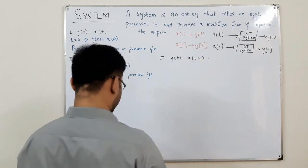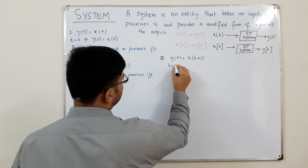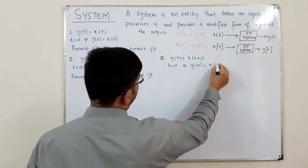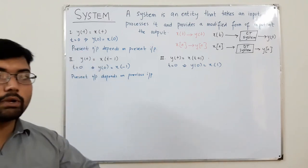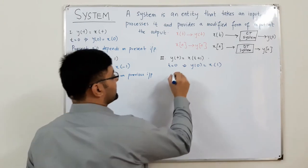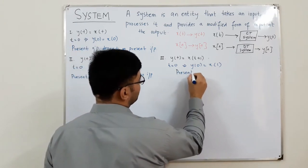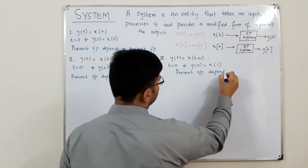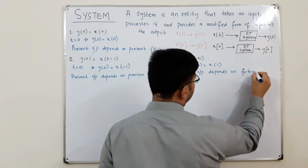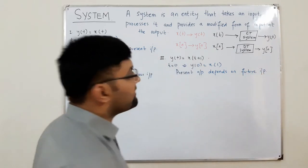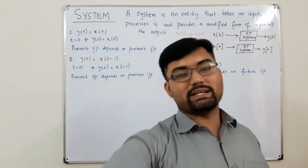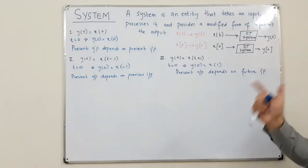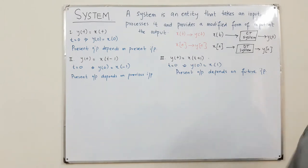For the third case, y(t) = x(t+1). At t=0, y(0) = x(1). Since 1 is the next value, the present output depends on the future input. So the present output can depend on three cases: the present value, the past value, or the future value. Understanding this concept makes the rest of systems theory much easier.